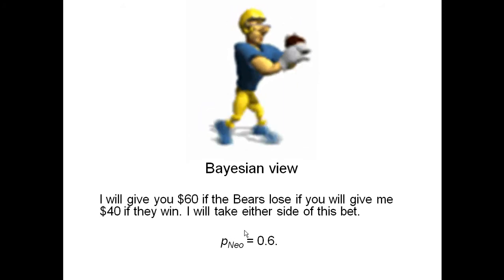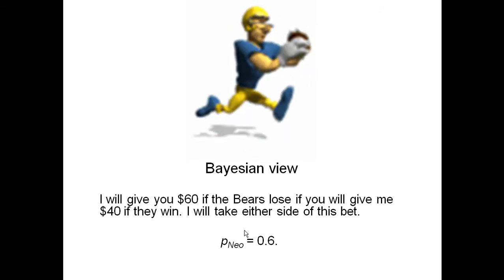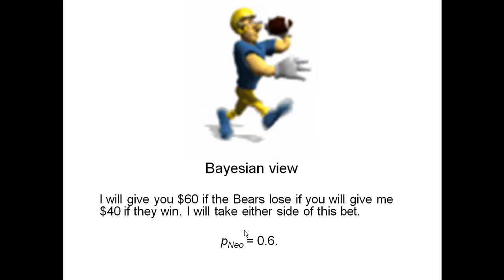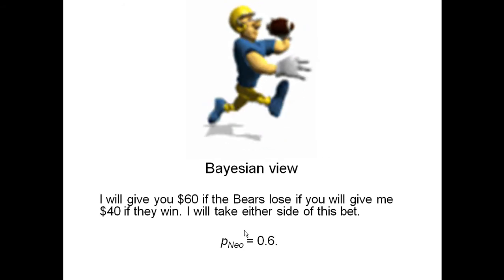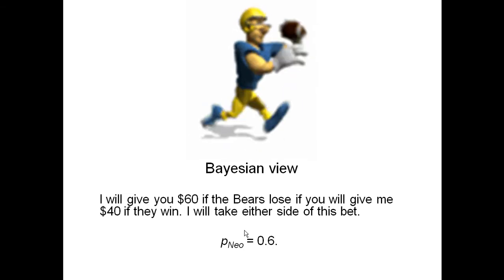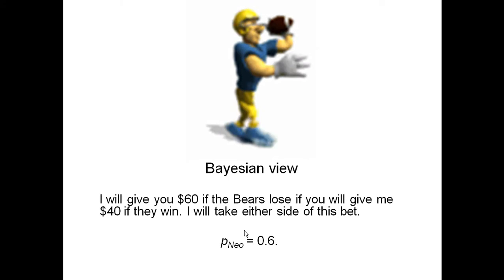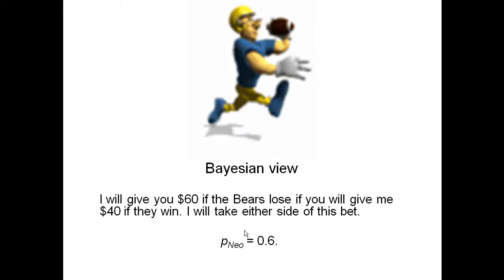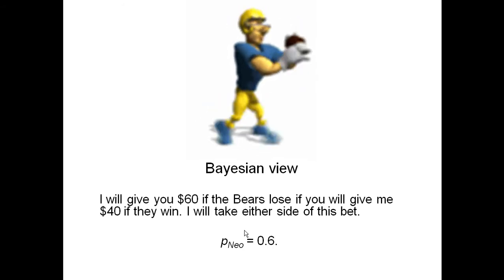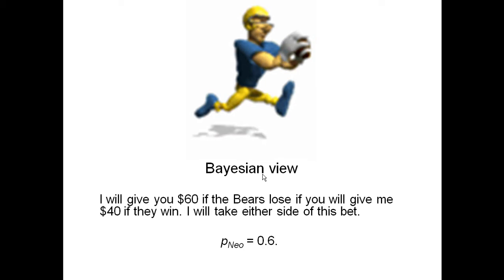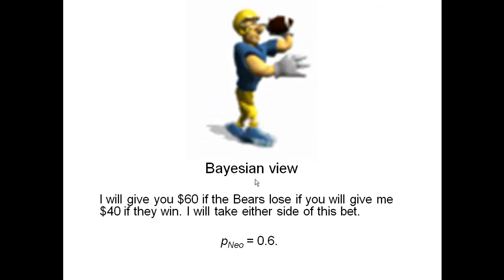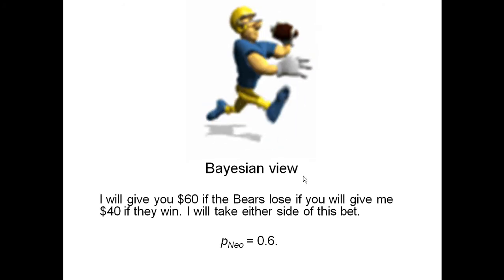The Bayesian view does not ignore relative frequencies. De Finetti, another famous Bayesian, has shown that if we make certain reasonable assumptions about a person's beliefs, their Bayesian view has to converge to a relative frequency. In other words, if I tossed a thumbtack a thousand times and it came up heads 371 times, the probability of heads would have to be about 0.371 under reasonable assumptions. It would be foolish to think it was 0.999 after only landing heads 371 times. So the Bayesian view kind of subsumes the frequentist view — Bayesians do believe in relative frequencies, they just extend it to events that are not relative frequencies.